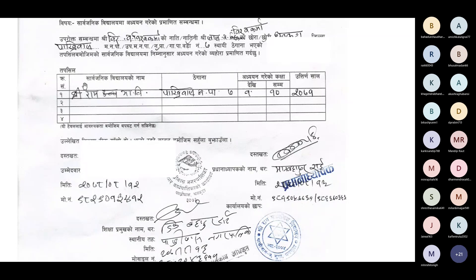If you cannot fill that section, leave it. You will write the name of your school. In the next section, you will find information about classes 6 to 10 that you have studied.